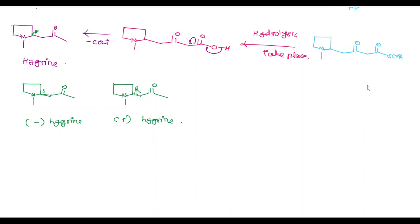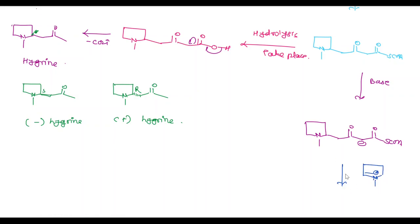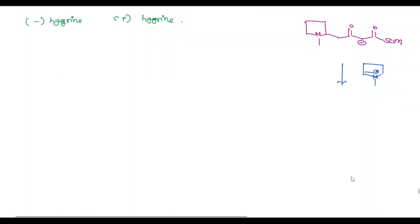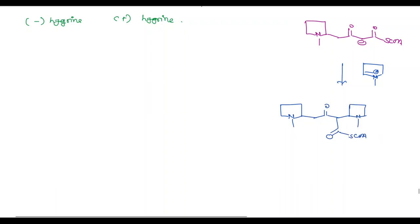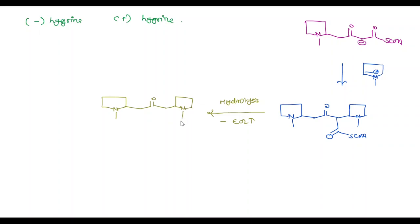Instead of hydrolysis, by using base, formation of an enolate anion takes place, and this enolate anion is again treated with N-methyl-Δ'-pyrrolinium cation. In the next step, hydrolysis takes place, and then loss of CO2 gives this moiety, which is known as cuscohygrine. The stereochemistry of cuscohygrine is not known.